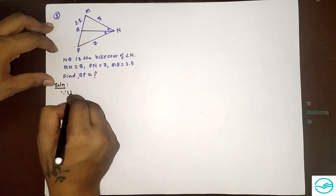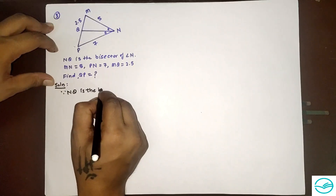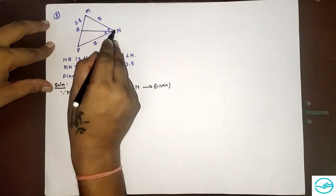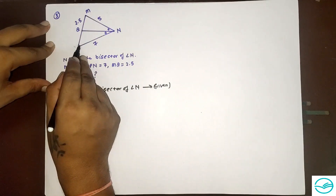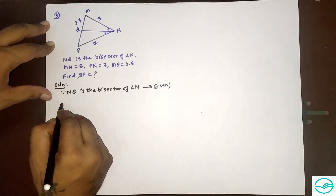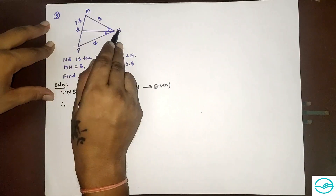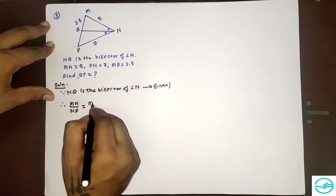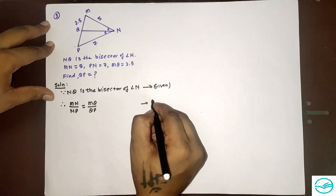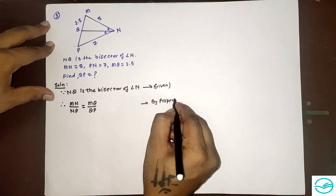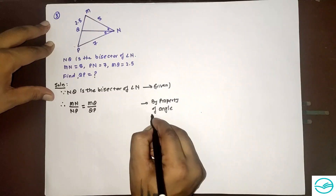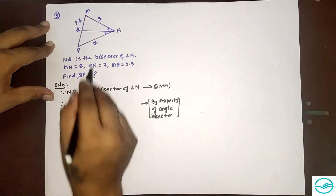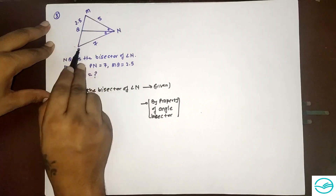Since NQ is the angle bisector of angle N, which is given, by the property of the angle bisector, MN divided by NP is equal to MQ divided by QP.